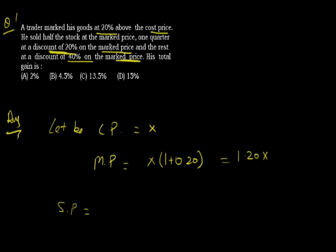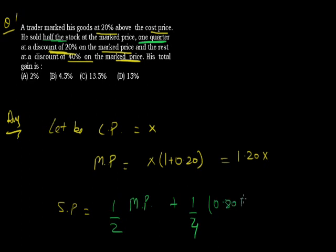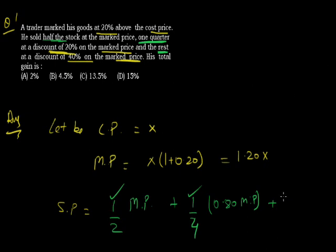The total selling price is made up of three parts. Half of the stock is sold at market price, that is (1/2) × M. One quarter is sold at a 20% discount on market price — with 20% discount we are left with 80%, so that is (1/4) × 0.80 × M. The rest is 1 minus 1/2 minus 1/4, which equals 1/4, sold at a 40% discount — leaving 60% of market price, that is (1/4) × 0.60 × M.